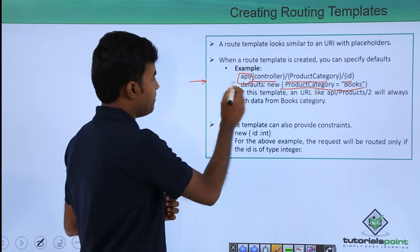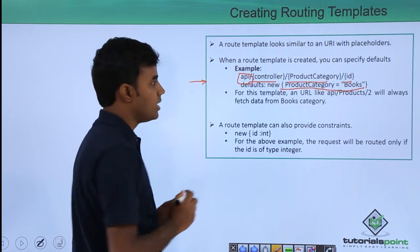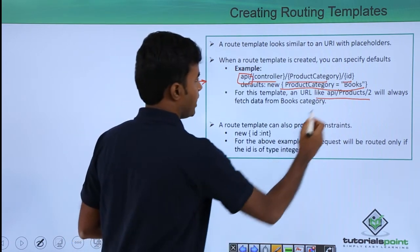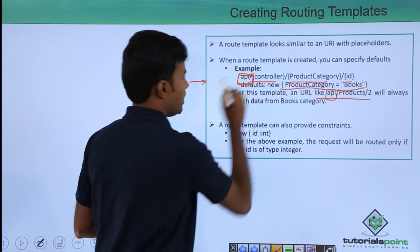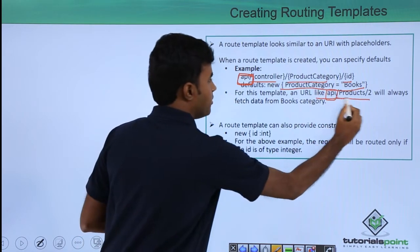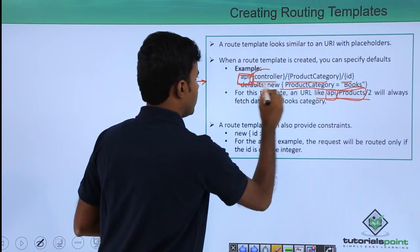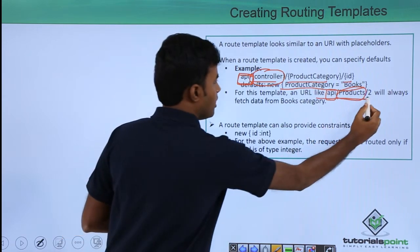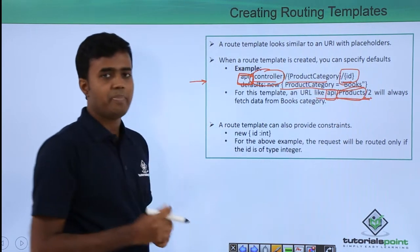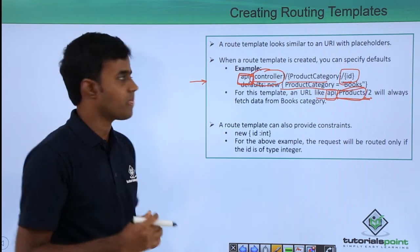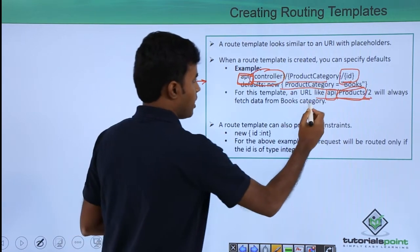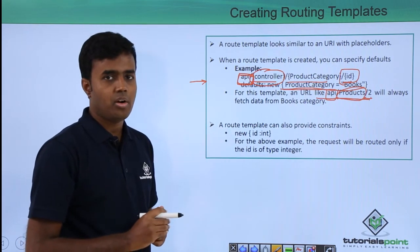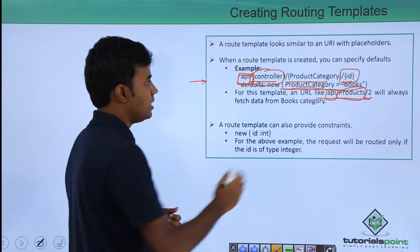For a template like this, suppose that the user gives a URL something like this. In this case, the API will match to your API, the products will match to your controller, so it will go and hit the products controller and the two will be mapped to the ID. It will be passed as a parameter to your action. And since the URL does not contain any information related to the products category, such a kind of URL will always fetch the data from the books category.